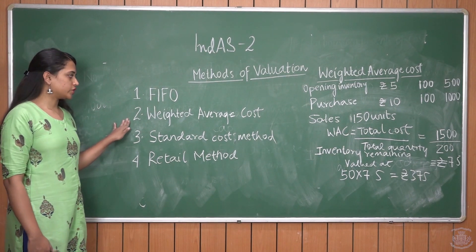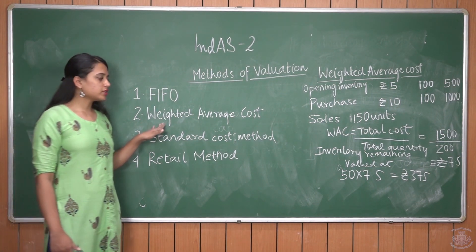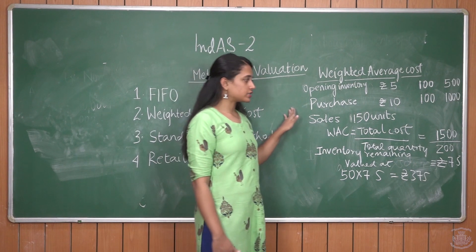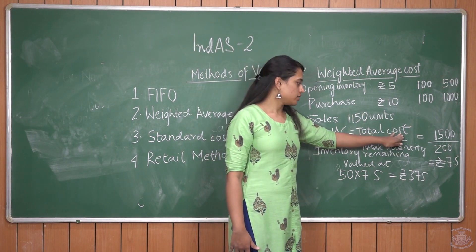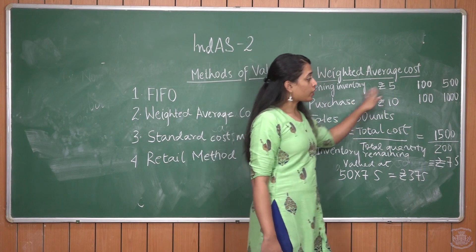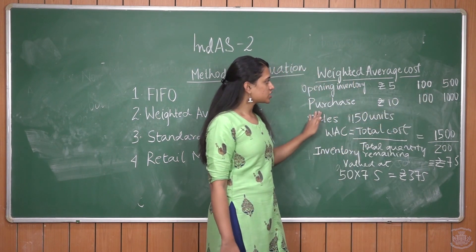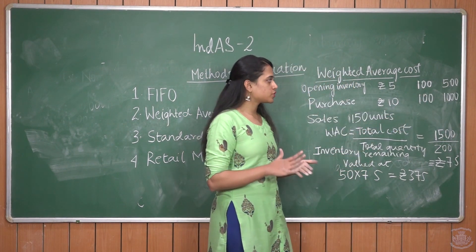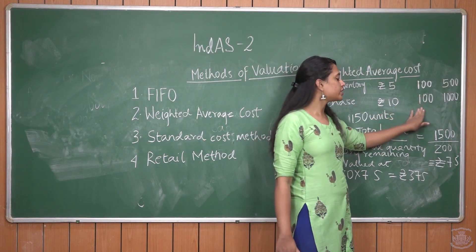The second method of inventory valuation is the weighted average cost method. In this method, we assume a weighted average cost to determine the amount going into COGS and inventory. Weighted average cost per unit is calculated as total cost of goods available for sale divided by total quantity of goods available for sale. In this example, opening inventory is 100 units at Rs. 5, totalling Rs. 500. Purchases are 100 units at Rs. 10, totalling Rs. 1,000. Total cost of goods available for sale = Rs. 1,500; total quantity = 200 units.